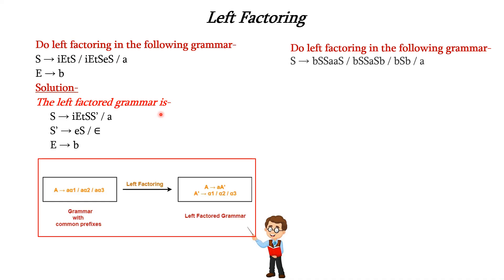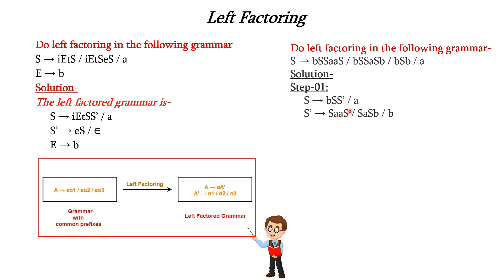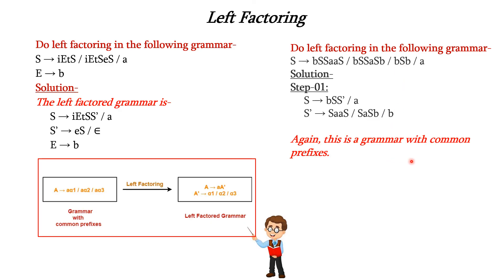Let us see one more example. Here we have a production, and the common prefix is BS, since BS appears in three of the alternatives. So S → BS S', and the other alternative 'a' is written as it is. S' is used for the remaining parts: S' → SAAS | SASB | B. Now this grammar still has a common prefix — SA is common to two of these productions.